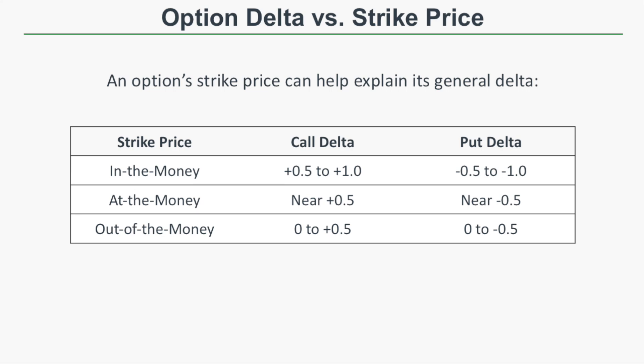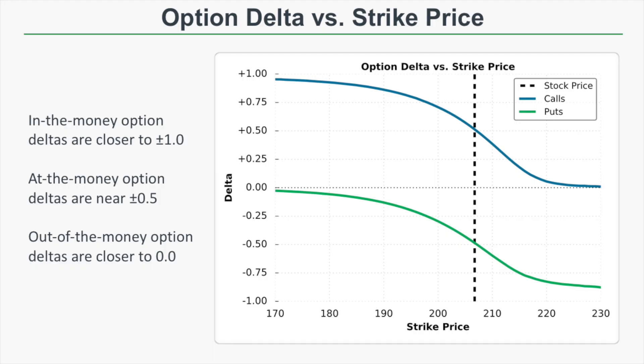Out-of-the-money options are less sensitive. Out-of-the-money calls have deltas between 0 and 0.5, while out-of-the-money puts have deltas between 0 and negative 0.5. This last slide is just the previous table in visual format. In-the-money calls have deltas closer to plus 1, out-of-the-money calls have deltas closer to 0, in-the-money puts have deltas closer to negative 1, and out-of-the-money puts have deltas closer to 0.